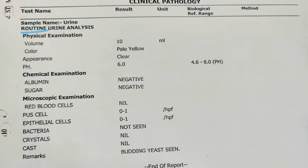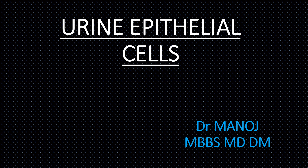This is a sample report of a urine routine microscopy analysis where the report is given under the following headings: physical examination, chemical examination, and microscopic examination. Today the topic of discussion is related to one of its components under the microscopic examination, which is the urine epithelial cells.